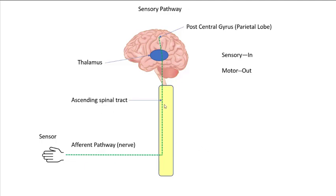The ascending spinal tract will move all the way up into the brain to the thalamus, where it will send information to the part of the cerebral cortex that processes sensory information, which is in the parietal lobe, specifically the post central gyrus.